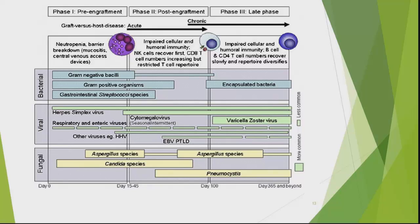The conditioning regimen itself causes severe mucositis, leading to GI translocation and mucosal barrier breakdown, which can allow organisms from central catheters to enter the bloodstream. Virus-wise in phase one, herpes is a risk, as are community respiratory viruses depending on the season. You won't think about enteric viruses in December through February — you'll think influenza — and not enteric viruses until the summer months. For fungal infections in phase one, you think aspergillus and Candida.